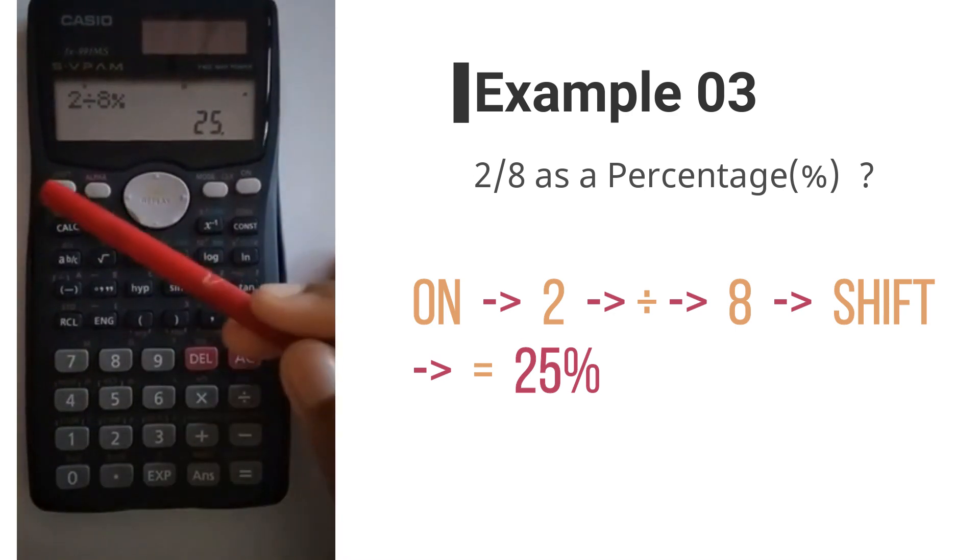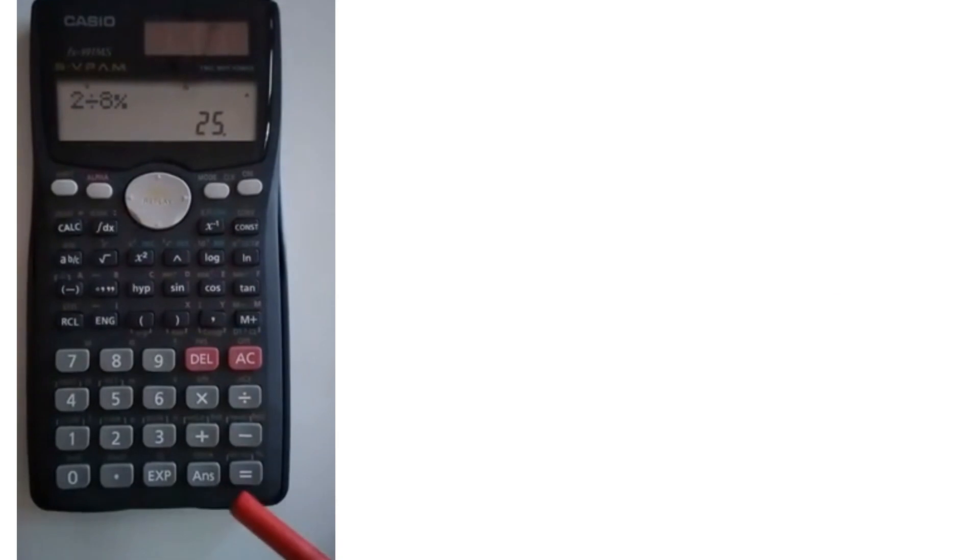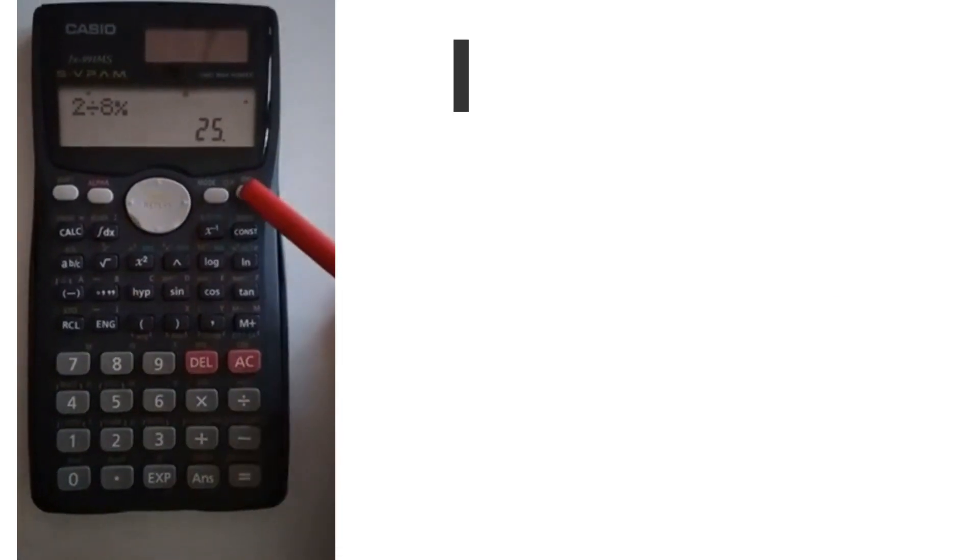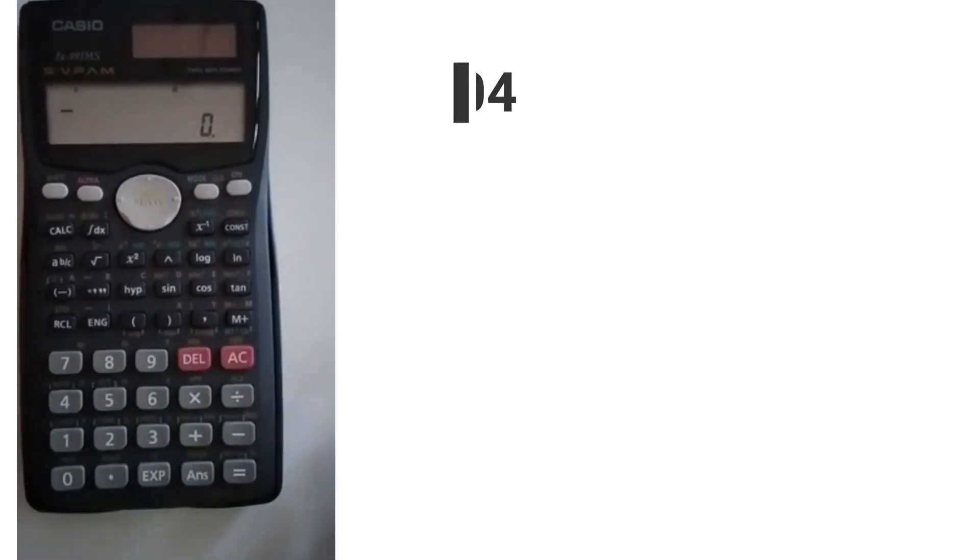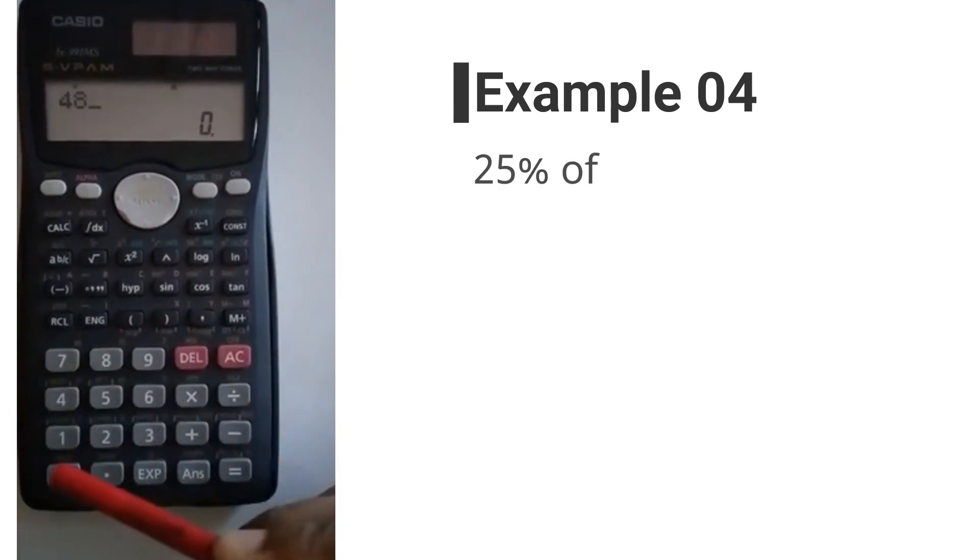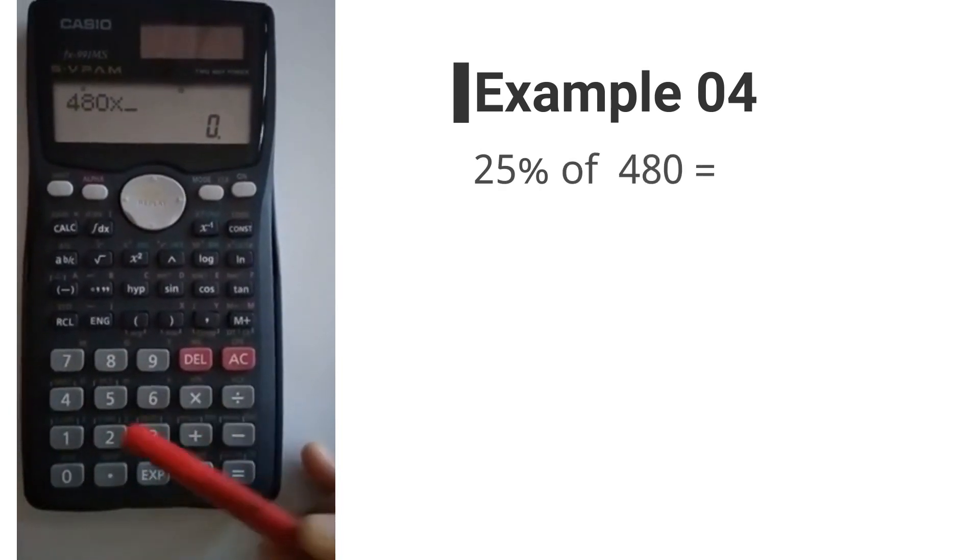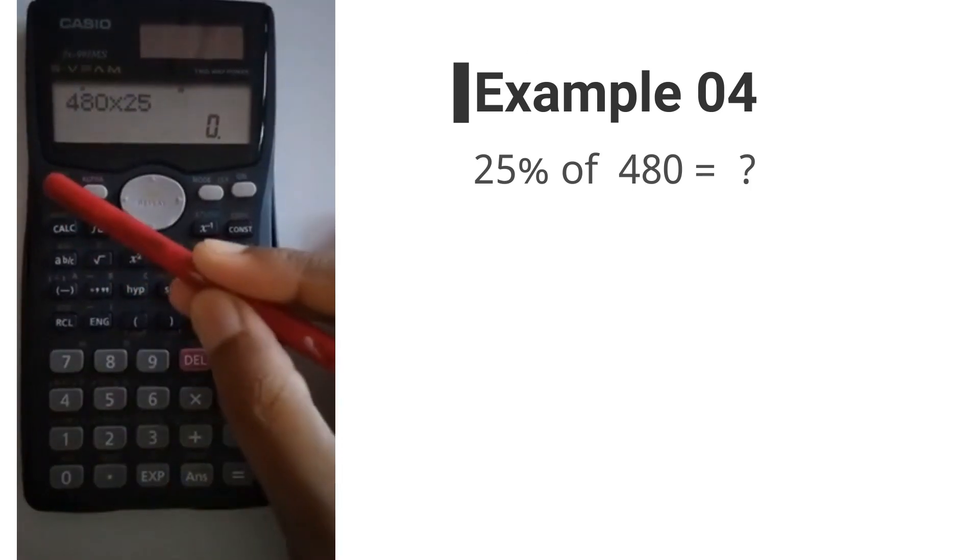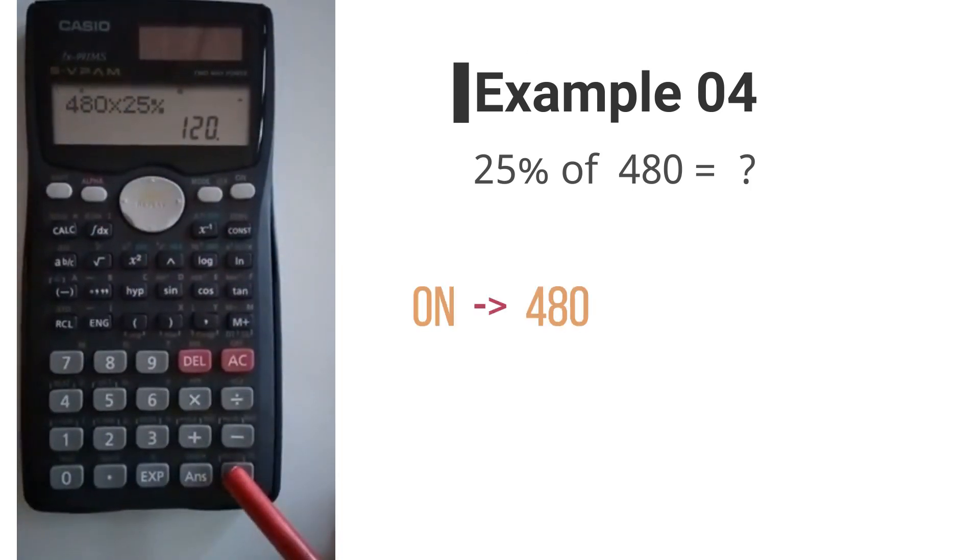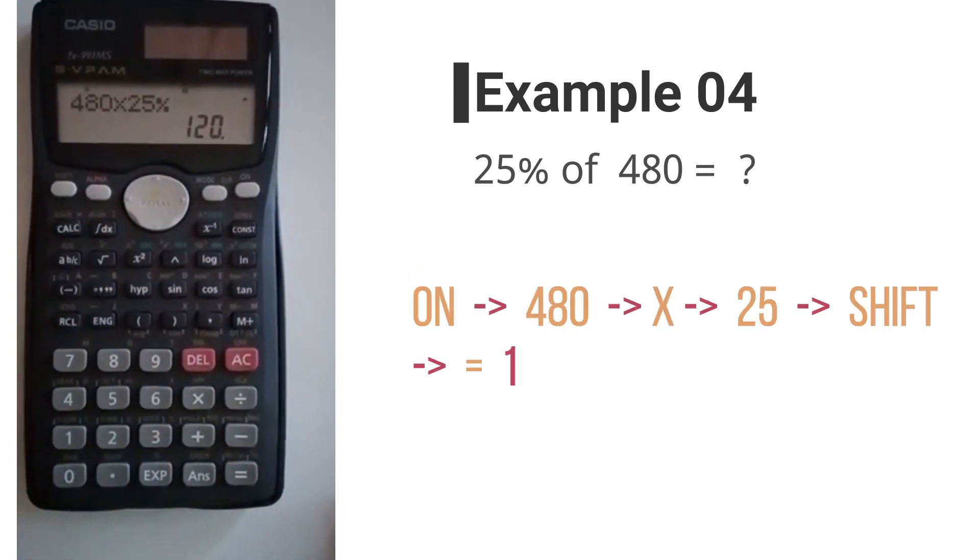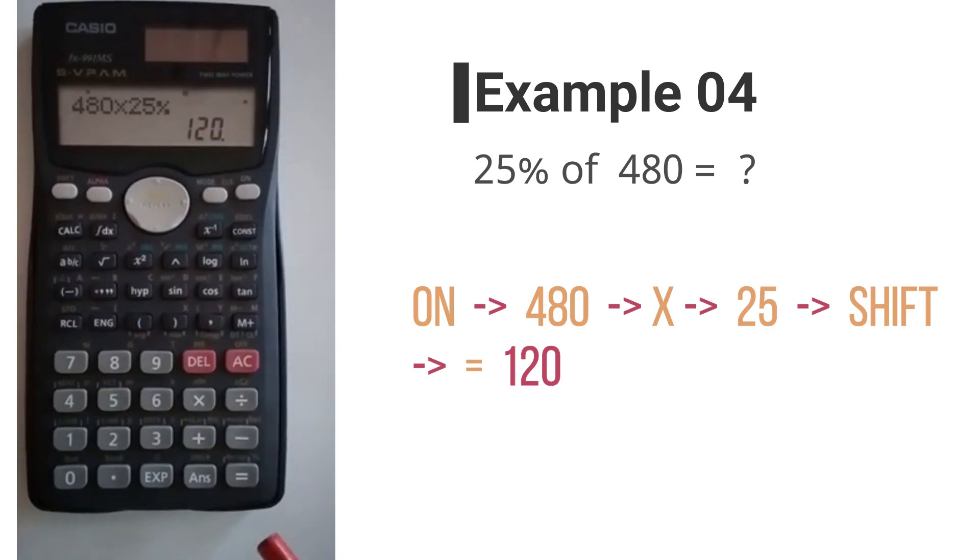the percentage, you have to go to the shift button and then to the equal key. Moving on to the next example: 480 multiplied by 25, shift equal, gives you 120. This says 25% of 480 is equal